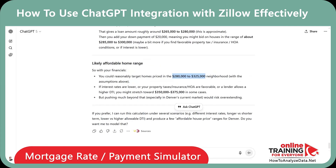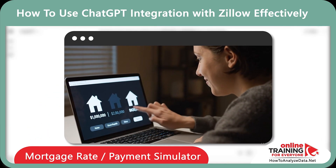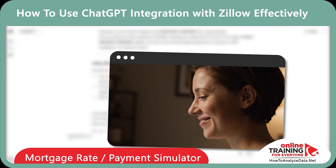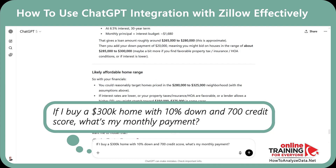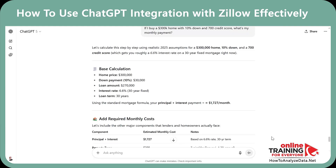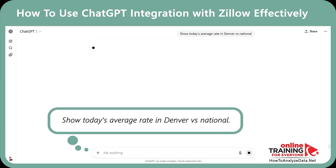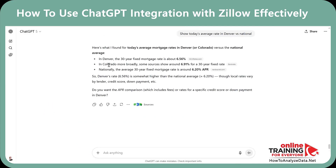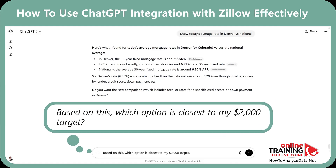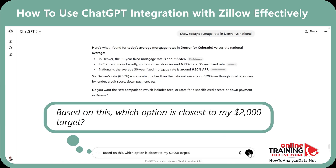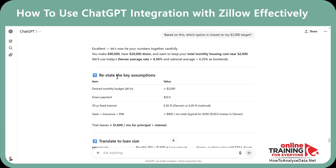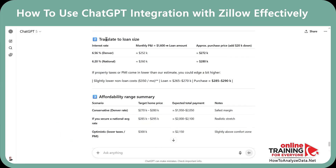In this particular case, it's between $280k and $325k. Now I can simulate payments for a specific price range and see how rates or down payments change my monthly costs — perfect for what-if scenario planning when rates move. "If I buy a $300k home with 10% down and a 700 credit score, what is my monthly payment?" You get completed calculations in seconds. "Show today's average rate in Denver versus national." You get a comparison between Denver, Colorado and the national average rate. "Based on this, which option is closest to my $2,000 target?" ChatGPT summarized your scenario, restated key assumptions, translated this into loan size, and provided an affordability range summary.